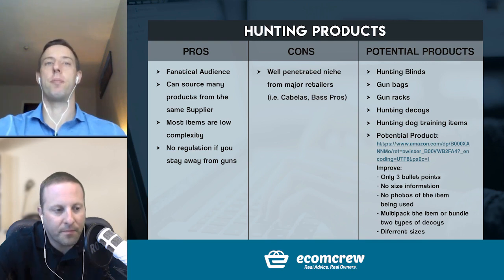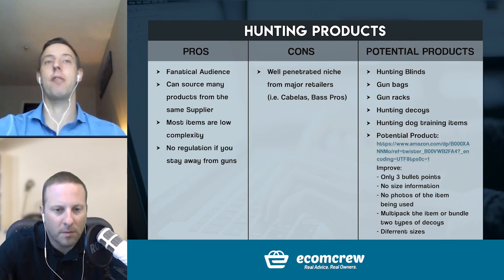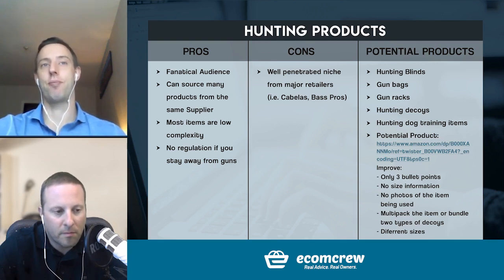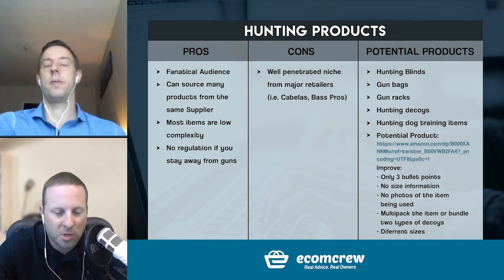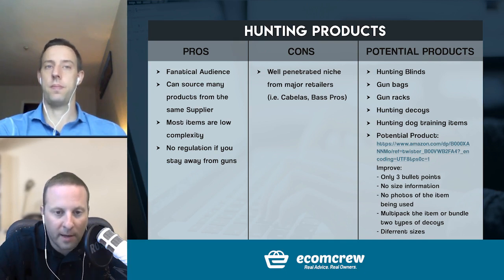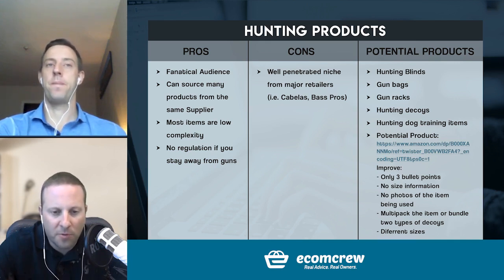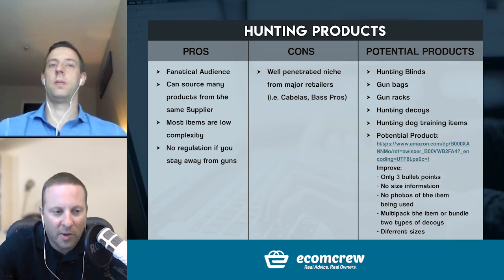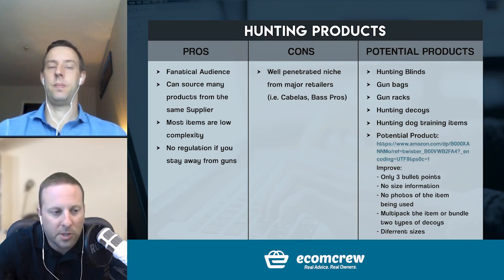You can source a lot of products from one supplier. Chances are one factory is making maybe 10 or 20 different products, or you can find a really good trading company specializing in hunting products and get 90% of your product catalog from one supplier. Being low in complexity is another plus — some of these things on the potential products list are things we've looked at doing ourselves. A gun bag, for instance — you're not selling someone a gun, just a bag. All you're doing is sewing fabric and throwing a zipper on it. There are definitely lots of low-complexity items in this niche.